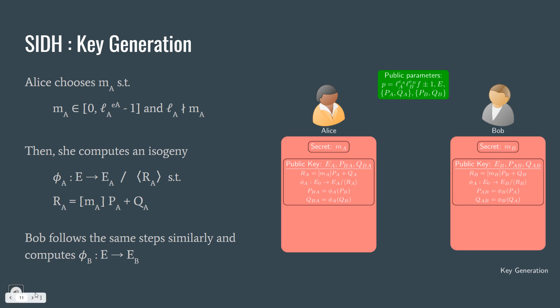SIDH key generation. In this step, Alice chooses a secret key ma such that this ma is between 0 and La to the ea minus 1, and this ma is not divisible by La. Then she computes an isogeny from E to EA such that the kernel of phi A is Ra, which is ma times Pa plus Qa. Since ma is a secret, Ra, the kernel point Ra, is also a secret. And by using this secret kernel point, phi A becomes a secret isogeny. Bob follows the same steps similarly and computes his secret isogeny phi B from E to EB.